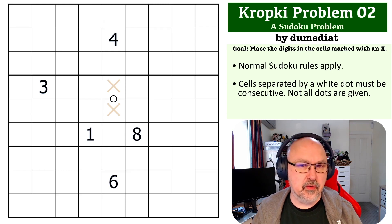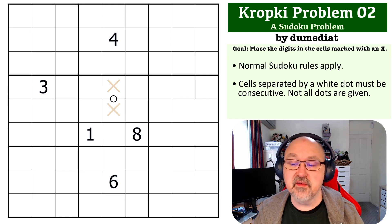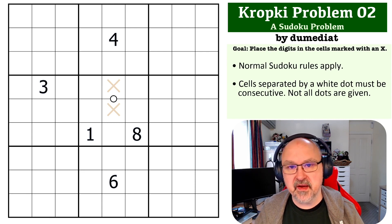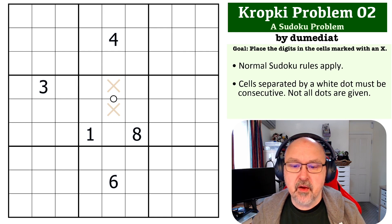So of course the rules in this puzzle are the normal Sudoku rules, although you don't have to fill out the whole grid. There is a white Kropki dot which means that the cells separated by the white dot must be consecutive. So pause the video, see if you can figure out the solution and I'll be back in a few seconds to explain this one.